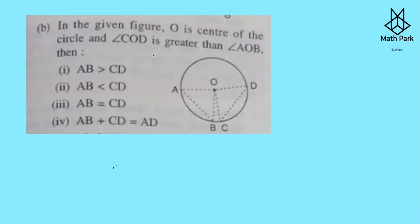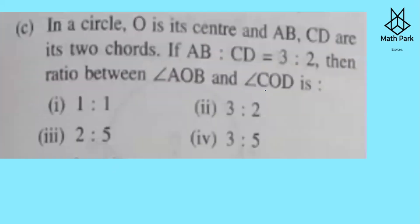Exercise 17B Question 2: O is the center and angle COD is greater than angle AOB. If the central angle is greater, the arc is greater, and the chord formed within that arc is also greater. Therefore CD is greater than AB, so AB is less than CD is the correct option.